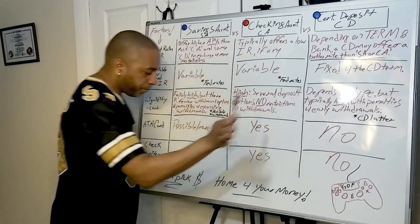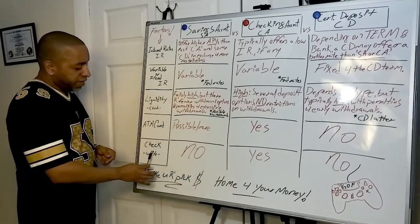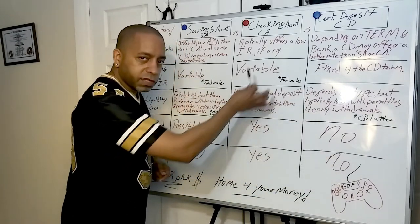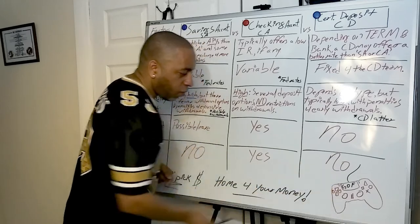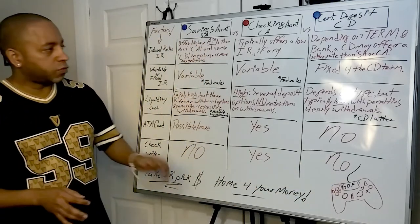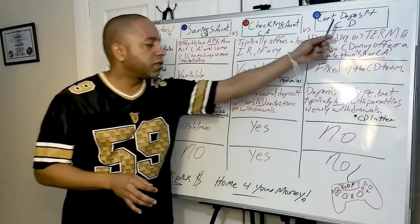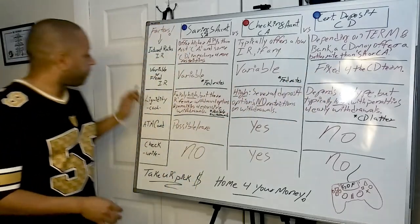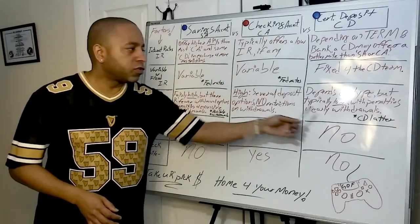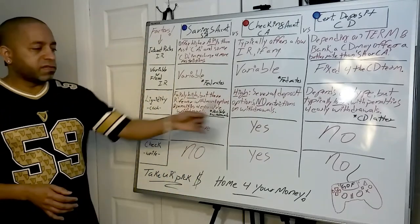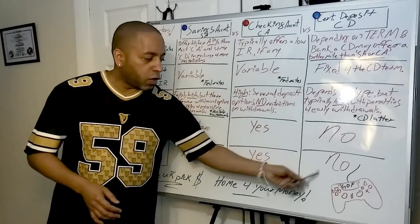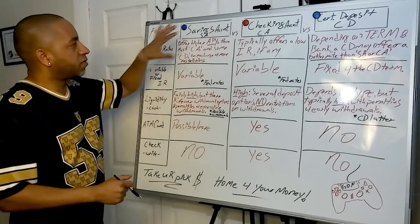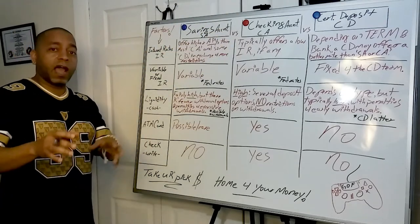For CDs, ATM cards are a no — you don't want to turn the CD into a checking account. Writing checks is also a no, for the same reason. So to summarize certificate of deposits: interest rate is potentially higher, the rate is fixed, liquidity is low with penalties, no ATM card, and no check writing.